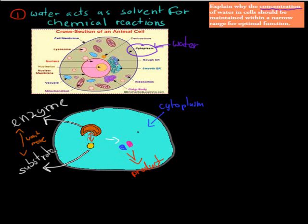Without water, they would just be standing, they wouldn't be able to meet. This makes sure that you have chemical reactions occurring. So the first point is we need water so that chemical reactions can occur because water is the solvent for chemical reactions in cells.